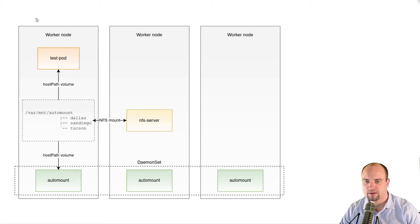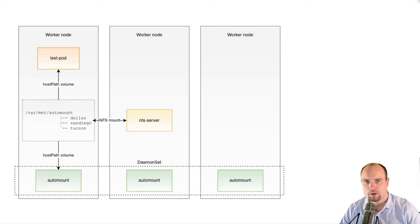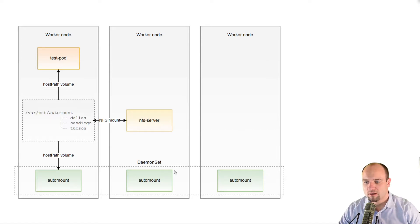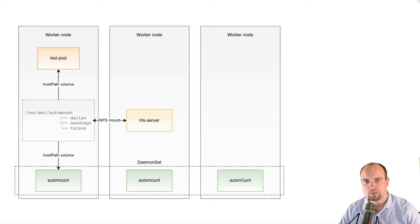Let's review the deployment diagram first. In this diagram I am showing three OpenShift worker nodes. One thing to note is that they are running Red Hat CoreOS, an operating system specifically designed for running containers. Unfortunately, Red Hat CoreOS doesn't allow you to install applications using RPM. So you need to create a container image with the automounter inside and run that image as a container on top of the OpenShift nodes. To ensure one instance of the automounter runs on each node, you can use the DaemonSet object in Kubernetes.